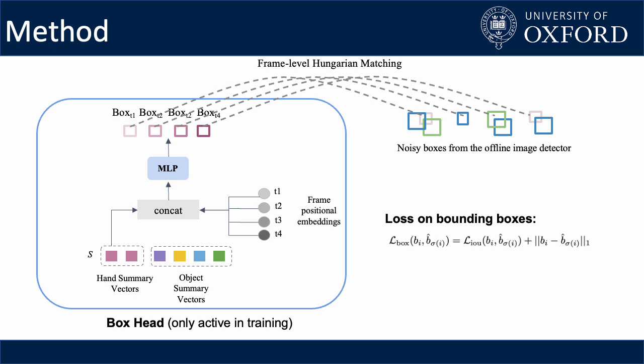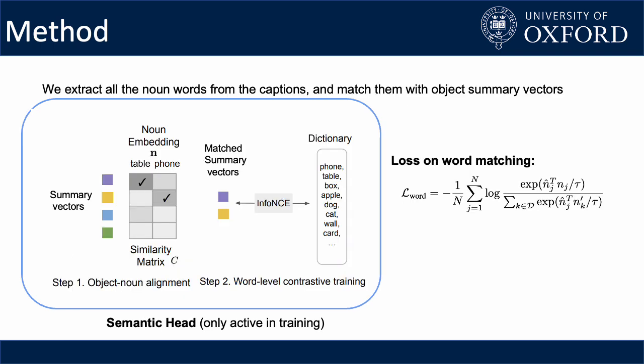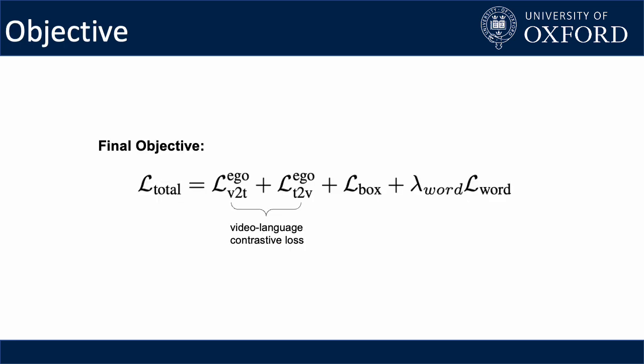In addition, we do not penalize the predicted boxes that are not matched to any label, which allows the model to find missing objects that are not detected. In the semantic head, we align the summary vectors with the nouns in the text. We first find the best match between predicted summary vectors and noun embeddings through Hungarian matching, and then contrast the matched summary vectors against a dictionary of nouns, training the vector to be close to its corresponding noun embedding among all candidates. The final loss is a combination of contrastive loss, bounding box loss, and semantic loss.